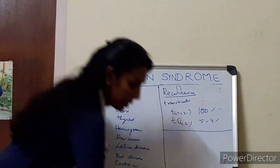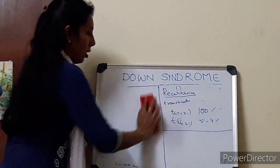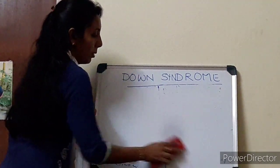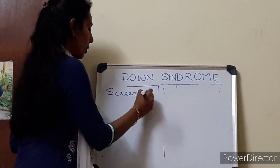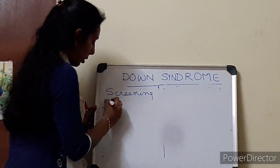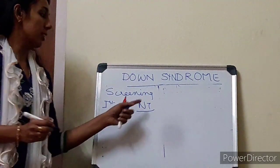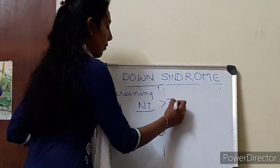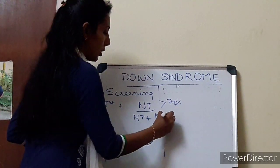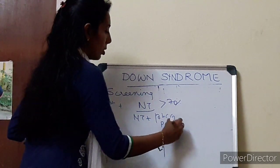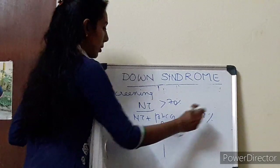Now we need to understand how we can screen for Down syndrome in future pregnancies. In the first trimester, we can do a nuchal translucency test which has a detection rate of around more than 70%. If we combine a nuchal translucency test with maternal beta-HCG and pregnancy-associated plasma protein A, the detection rate rises up to around 87%.